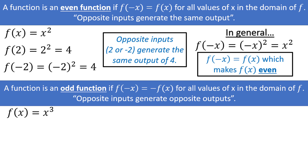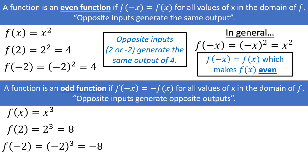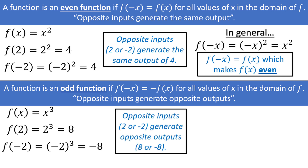For example, if you plug in 2, you get f of 2 is equal to 2 to the third power, which is equal to 8. If you plug in negative 2, you get f of negative 2 is equal to negative 2 to the third power, which is equal to negative 8. In other words, opposite inputs of 2 and negative 2 generate opposite outputs of 8 and negative 8.